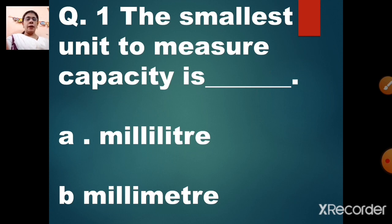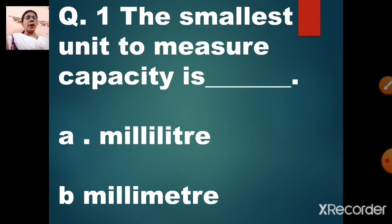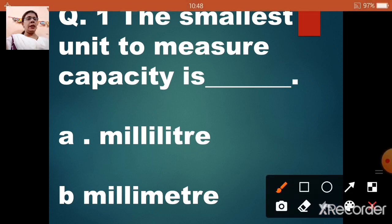Question number 1: the smallest unit to measure capacity is dash. Option A: milliliter. Option B: millimetre. Children, to measure capacity, which unit do we use — milliliter or millimetre? Milliliter, correct. It is the smallest unit to measure capacity, that is option A.